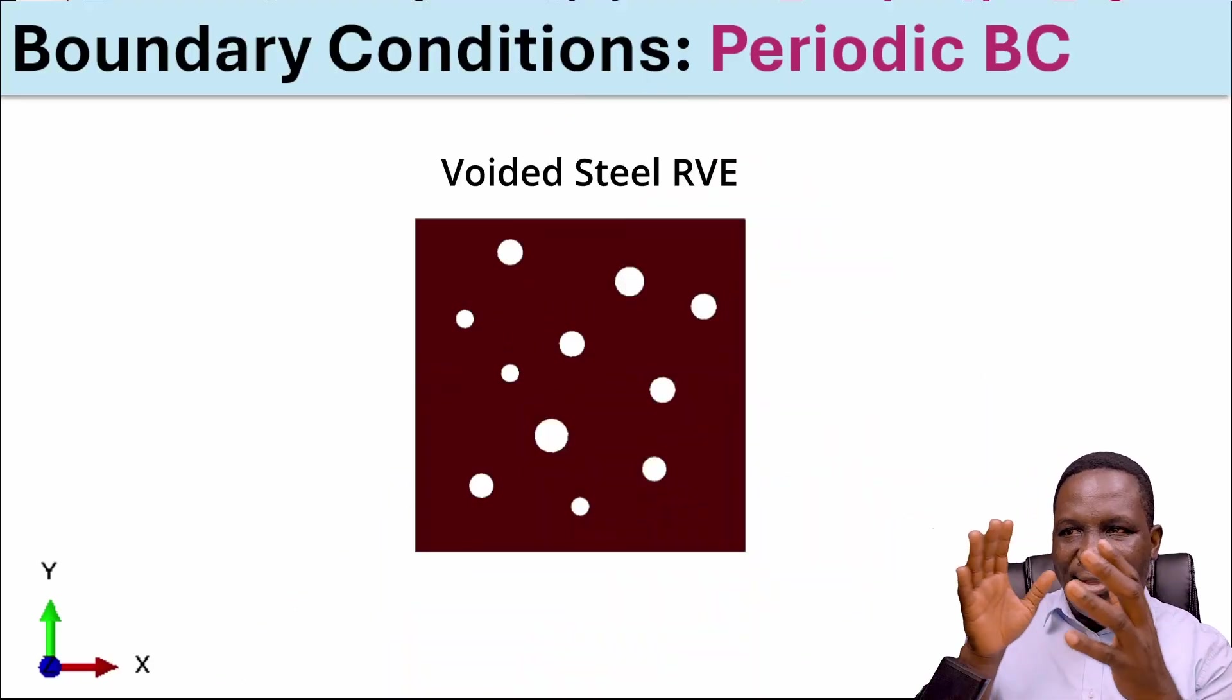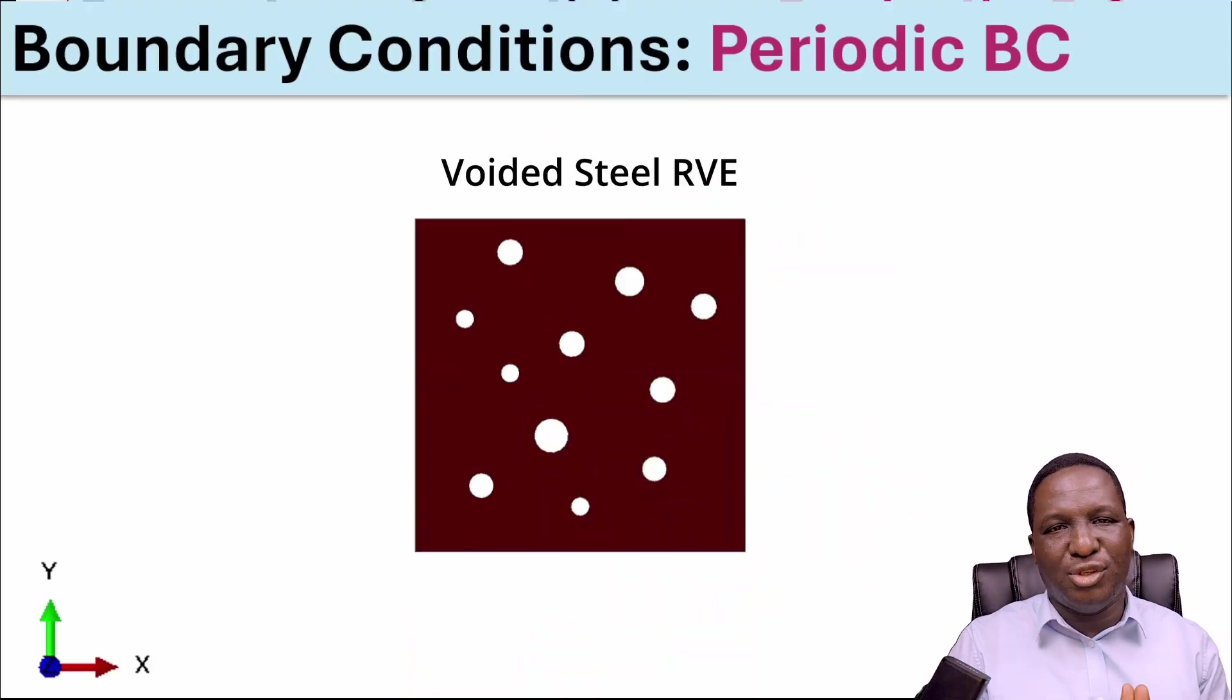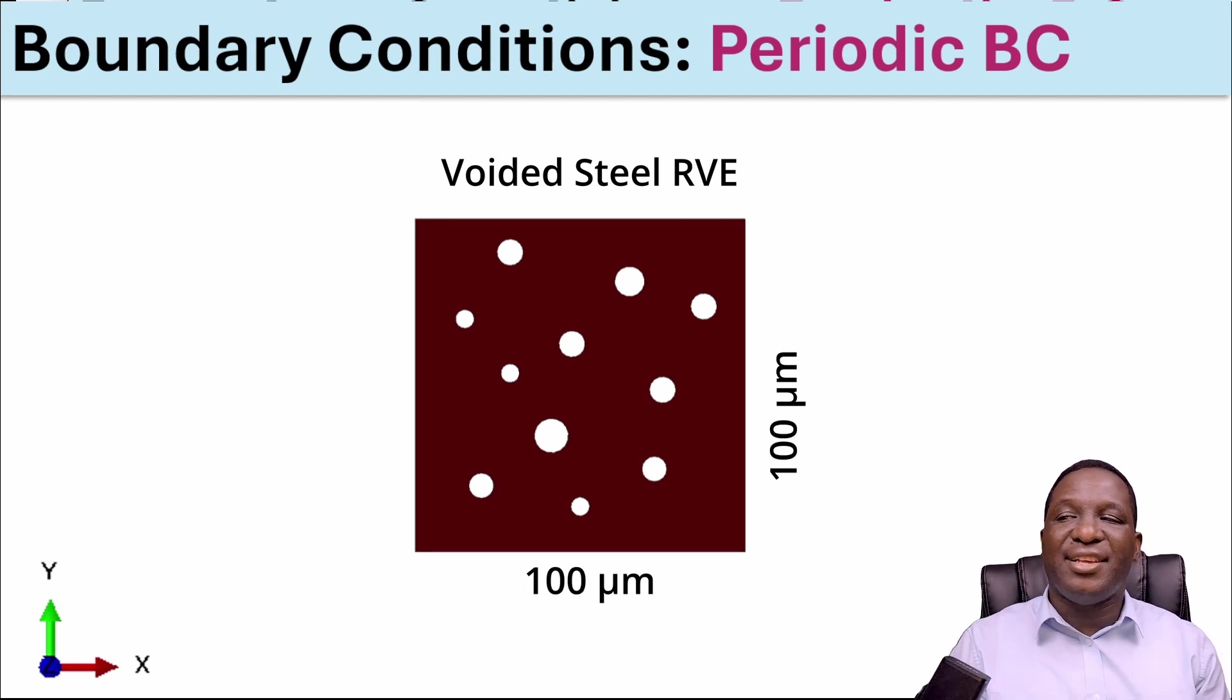First, I'll show you the theory of how periodic boundary conditions can be imposed on a model and the variables you need to request from your simulation to post-process the model and generate stress and strain data. This is a steel RVE with a dimension of 100 by 100 and very small voids distributed randomly within it.